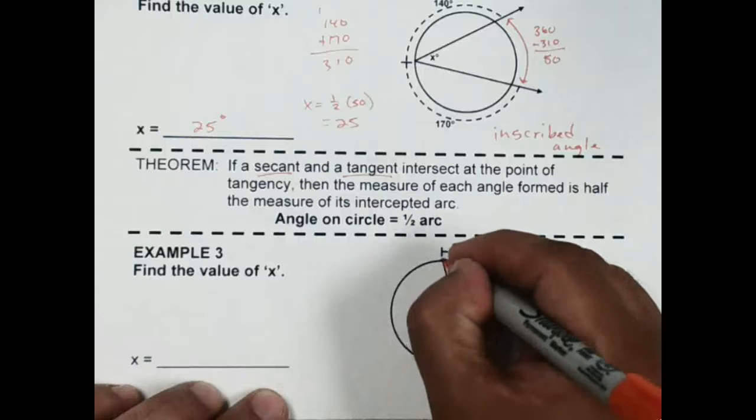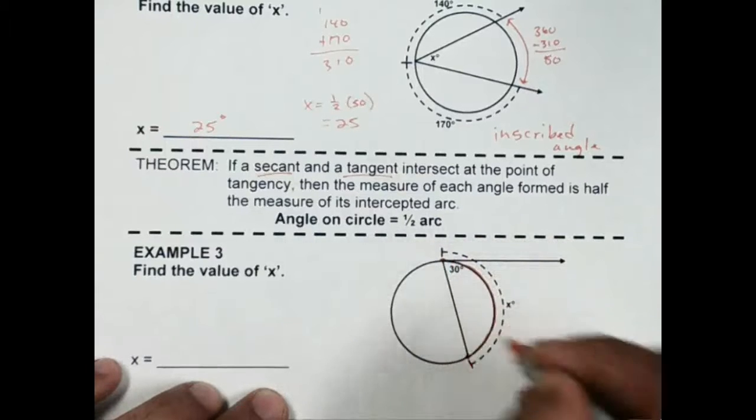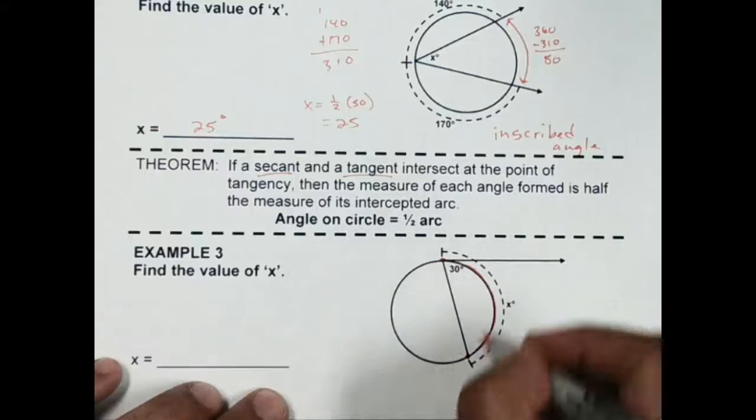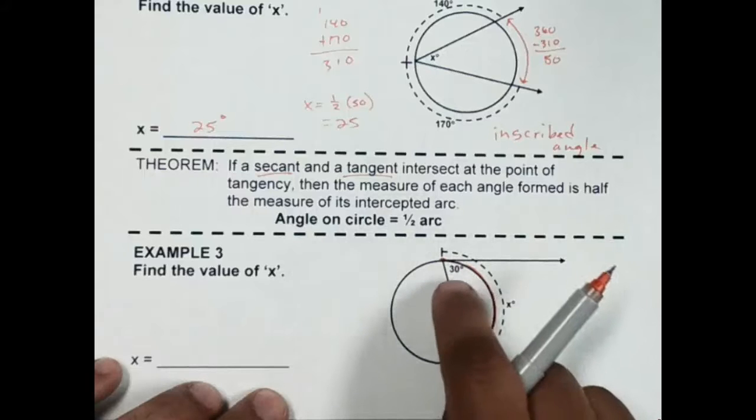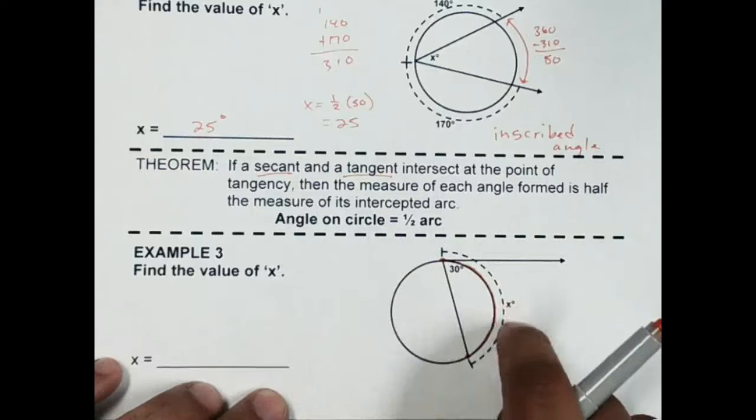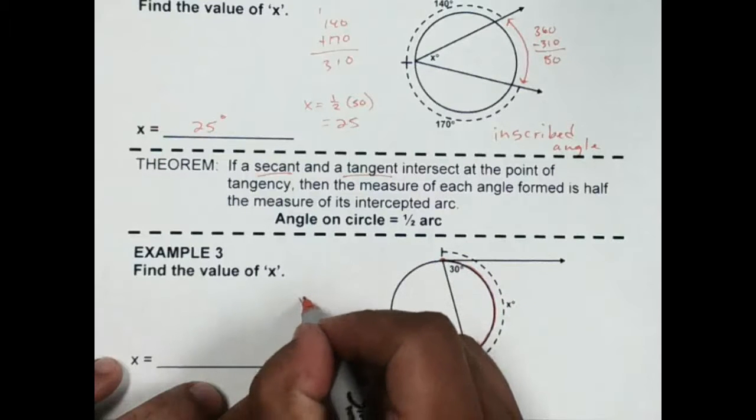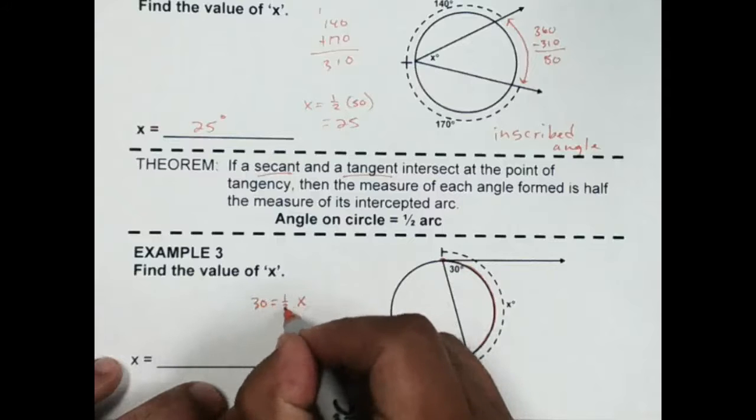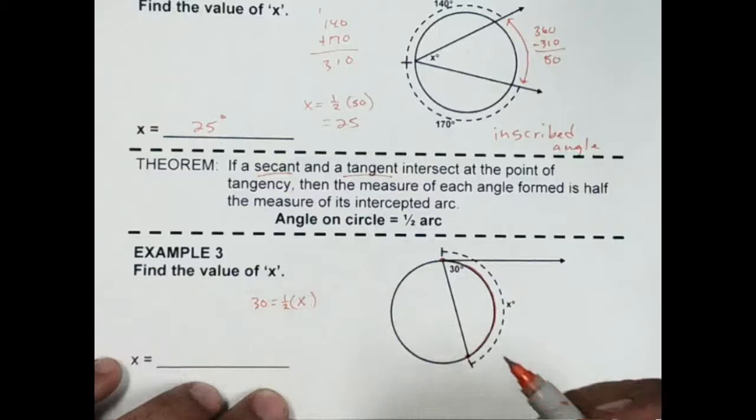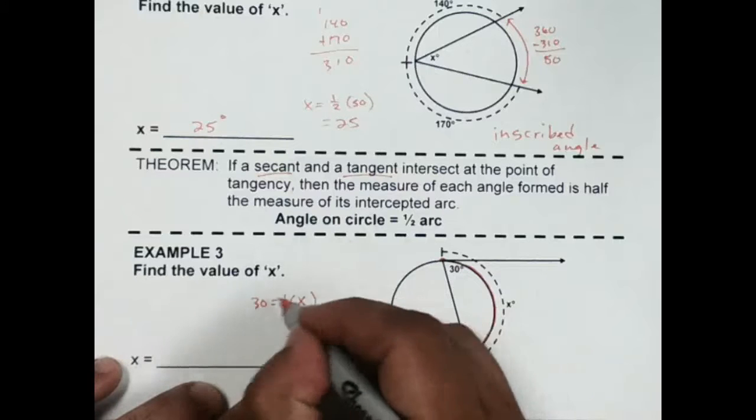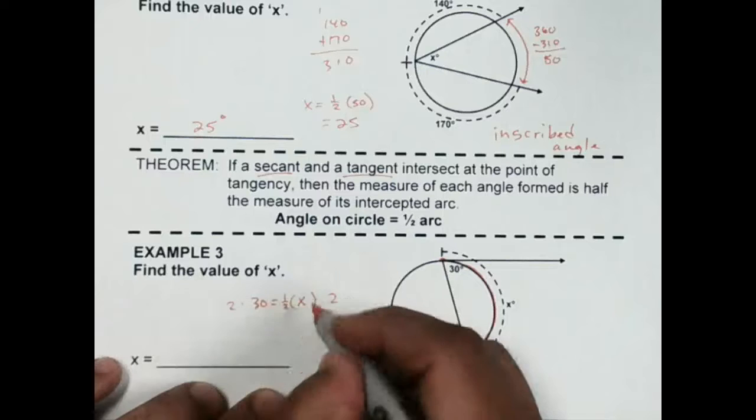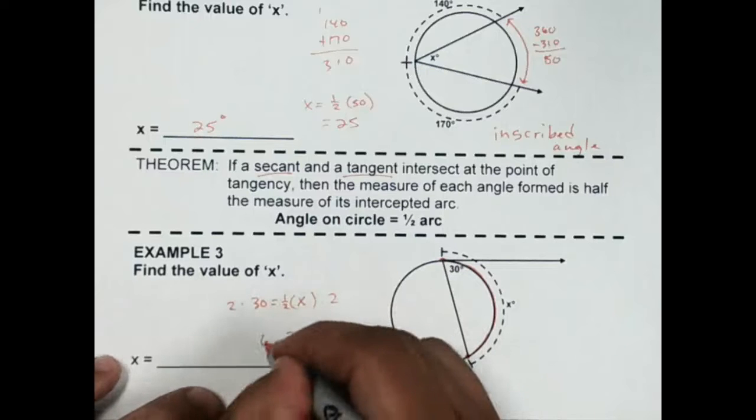Okay, so if I go from this point to this point, that's the intercepted arc, which is this value x. So I know that the angle is half the arc. So for x, 30 would be equal to half of x. So to do that, I'd multiply both sides by 2. So x would be 60.